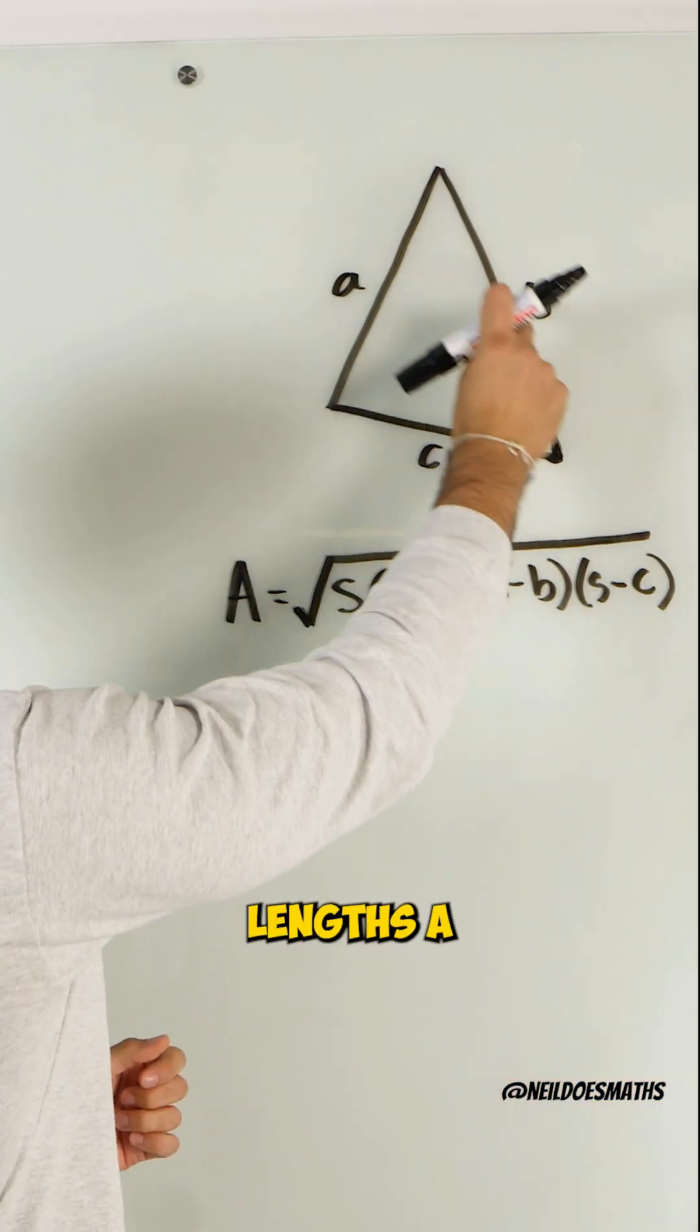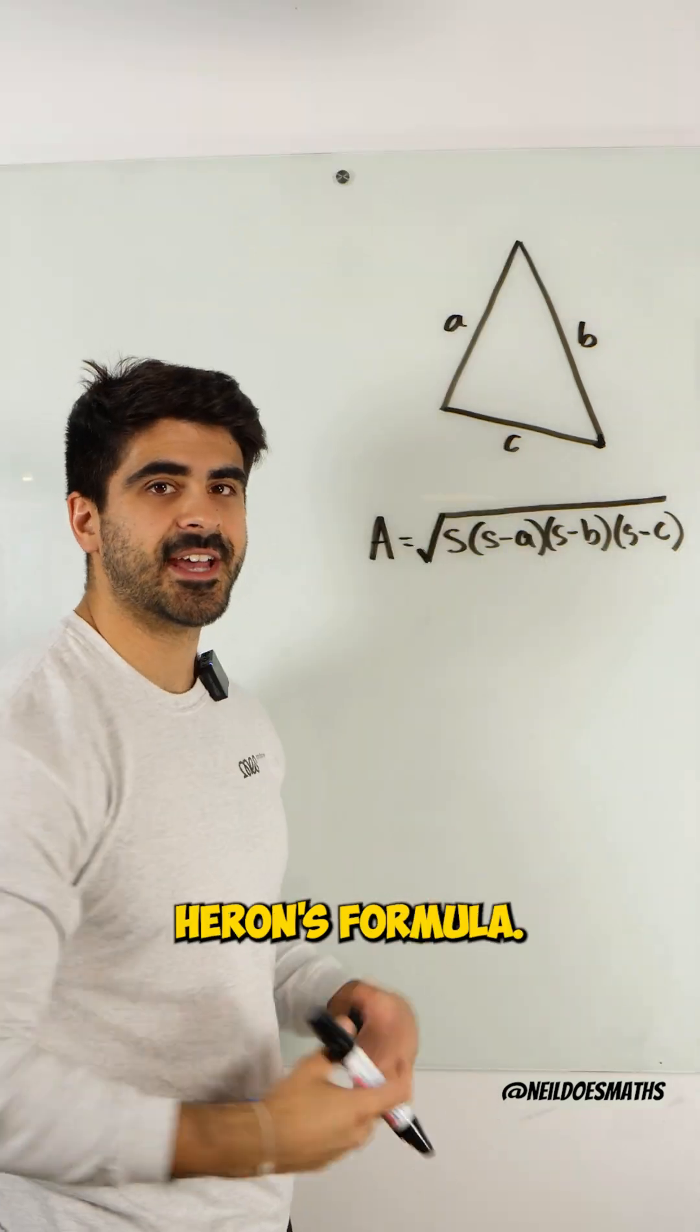So given a general triangle with three lengths, A, B, and C, this is Heron's formula.